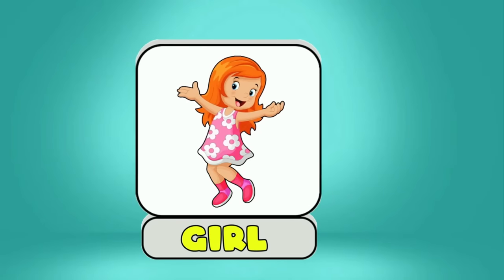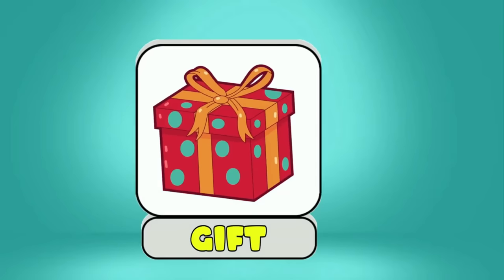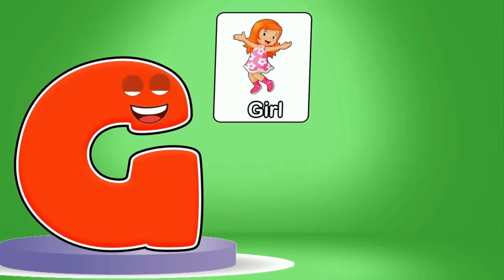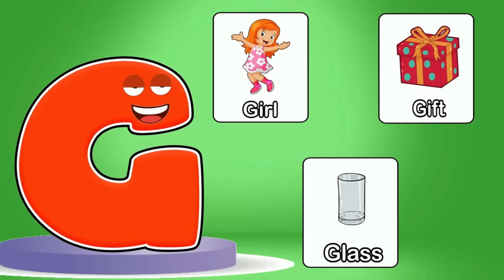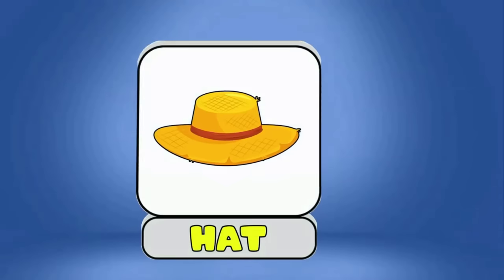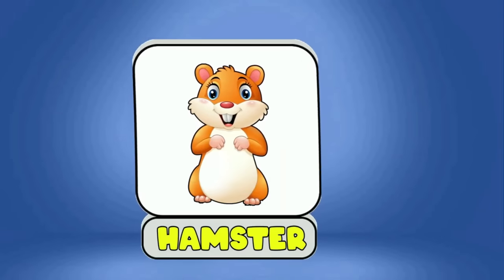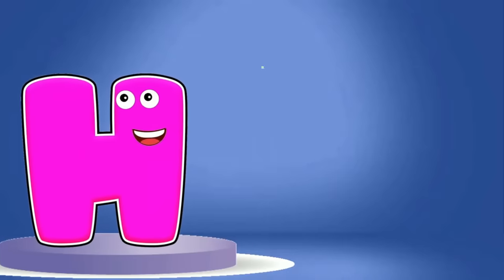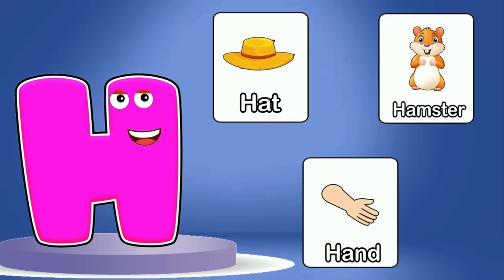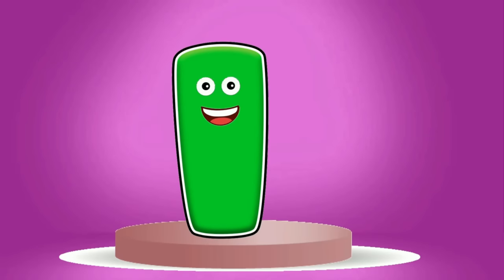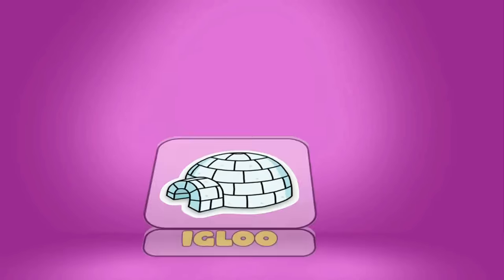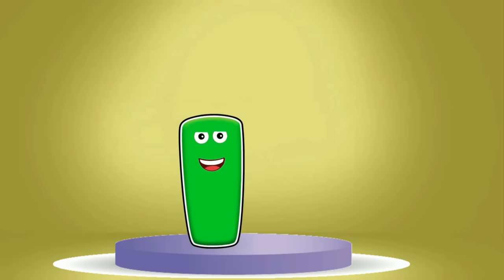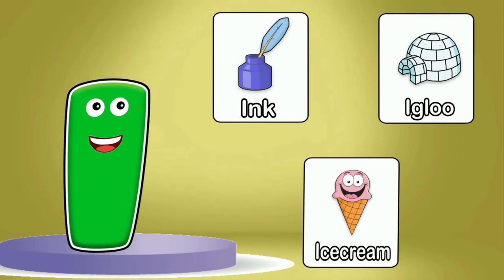Flag, Fish, Fan. This is G. G is for Girl, Gift, Glass. This is H. H is for Hat, Hamster, Hand.